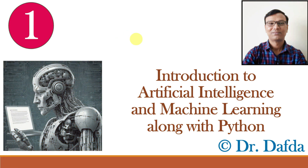Always remember one rule: everything is there in the name. So always start with the name, whether you are writing the answer, understanding or explaining. Here there are three terms: Artificial Intelligence, Machine Learning and Python. Artificial Intelligence — as the name suggests, artificial means manmade. The intelligence that we all have is created by God, and if we create some intelligence that is manmade, it is called Artificial Intelligence.